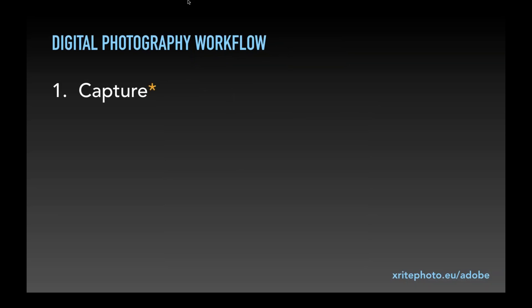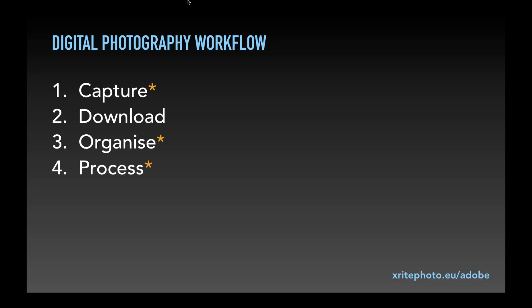Let's first review the digital photography workflow. First you capture images — with a camera, smartphone, or tablet. Then you download onto a hard drive or computer. After downloading, you organize — going through files, deciding which are the good ones. After organizing, you process and enhance: cropping, straightening, converting to black and white, adjusting color, dodging and burning, or using other localized adjustments. This is all processing.